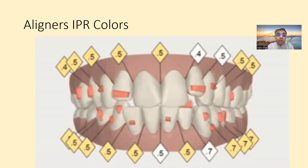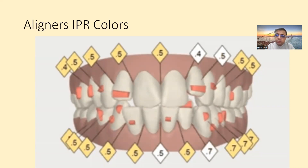Many candidates do not know that IPRs have different colors. The boxes or triangles representing IPR come in three colors in the exam — because the Invisalign company has three color codings for the IPR.